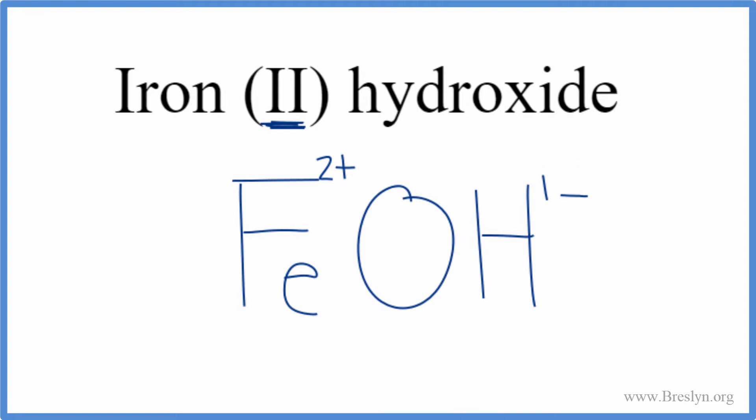Right now they don't, but we could use the crisscross method to change the subscripts. We move the 1 here and the 2 here. We don't write the 1 by convention, we can get rid of these charges. And we need to put parentheses around the hydroxide, since it's a polyatomic ion and we have two of them.